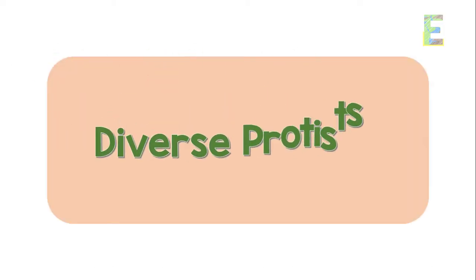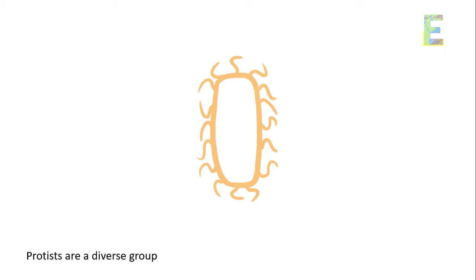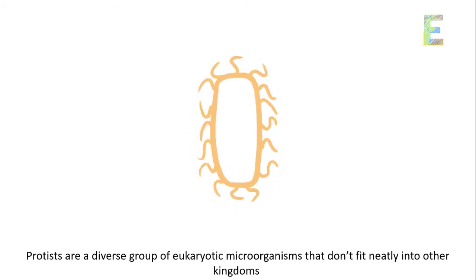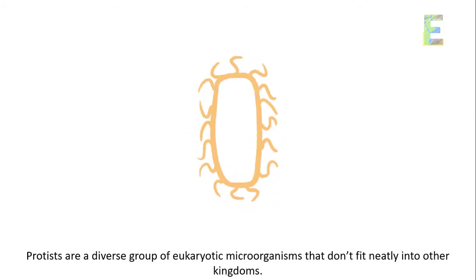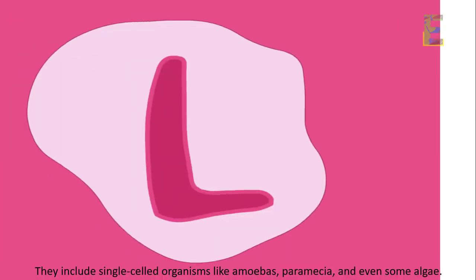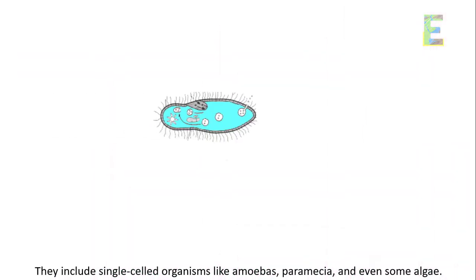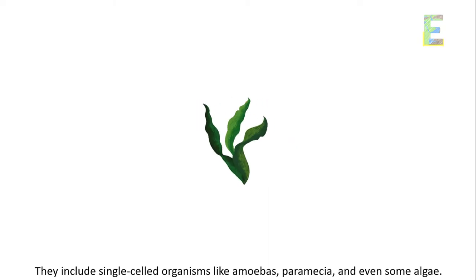Diverse protists — next, we encounter protists. Protists are a diverse group of eukaryotic microorganisms that don't fit neatly into other kingdoms. They include single-celled organisms like amoebas, paramecia, and even some algae.